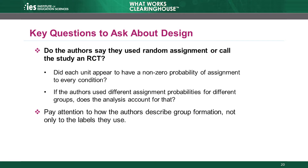We identified some key questions the WWC considers when reviewing a study design. The first question is: do the authors say they used random assignment or call the study an RCT? If the answer is yes, then check to see whether each unit appears to have had a non-zero probability of assignment to each condition.